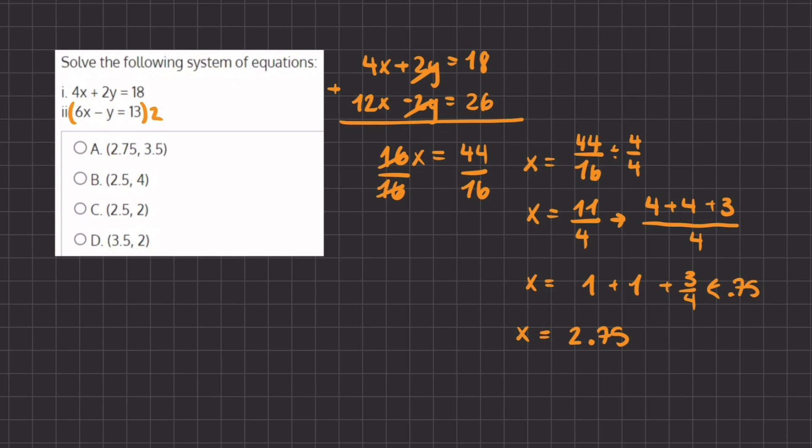Now we have our x value, and we can plug it into our first equation to find what the value of y will be. We have 4 times 2.75 plus 2y equals 18. We'll subtract 11 on both sides, and we are left with 2y equals 7.